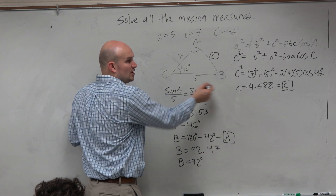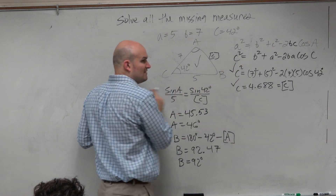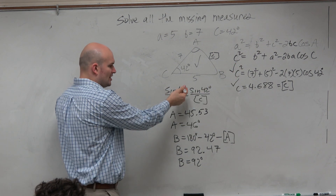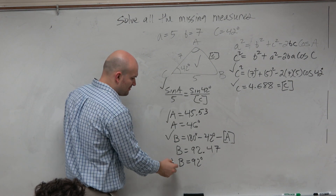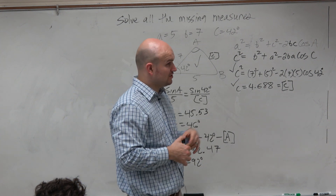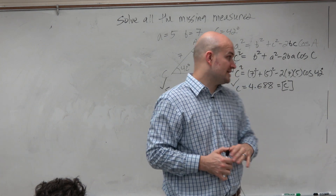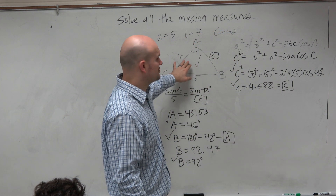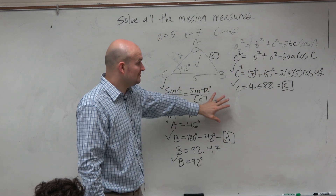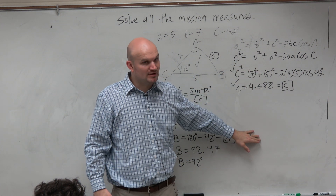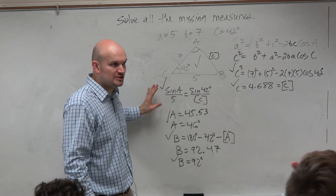For every variable you are solving for, make sure you're writing an equation. I know you guys can do a lot of work on your calculator, but the last thing I want is for you to just say 'here's my triangle and here are all the answers, I did them in my calculator.' That's not going to work. You need to provide an equation. You don't need to show me every step, but I'm not OK with you not providing what equation those variables came from.